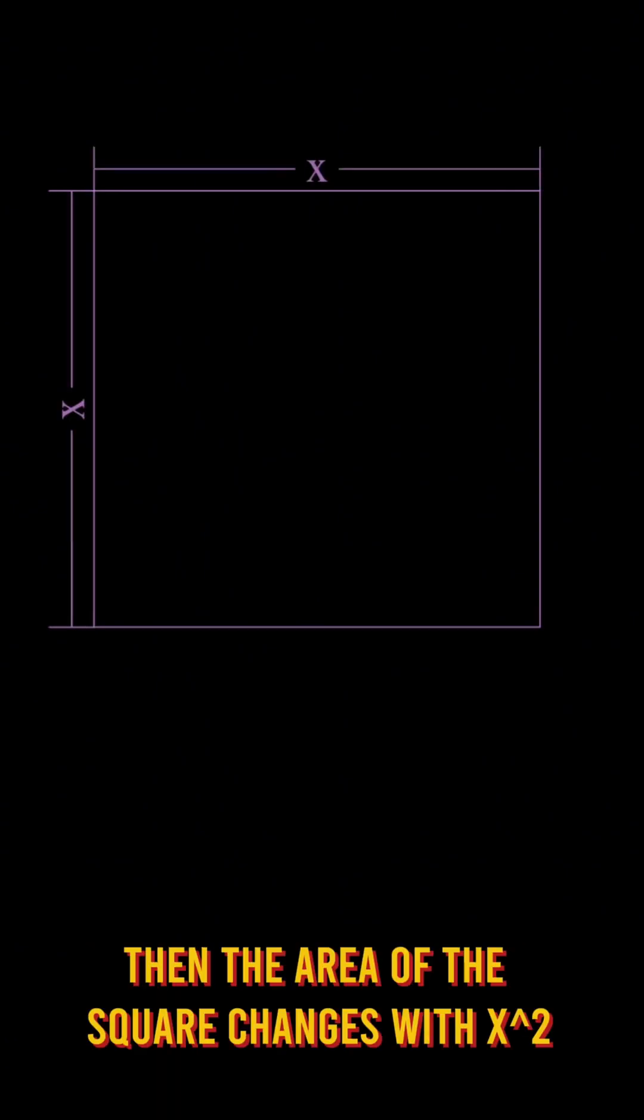Well, let's say we have a square. If each side has a length of x, then the area of the square changes with x squared.